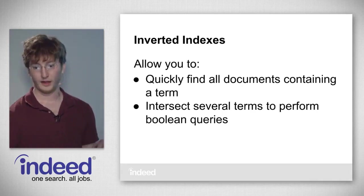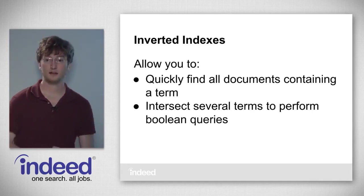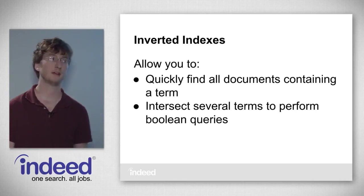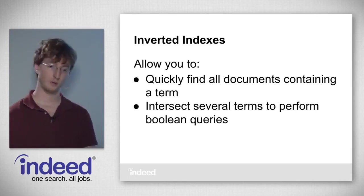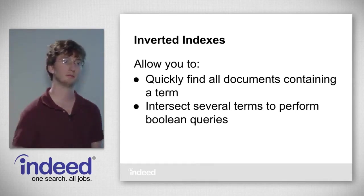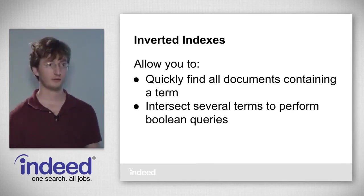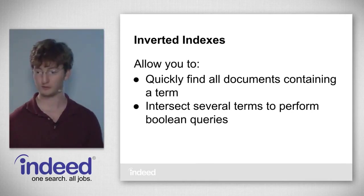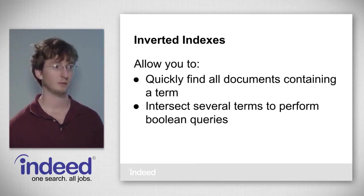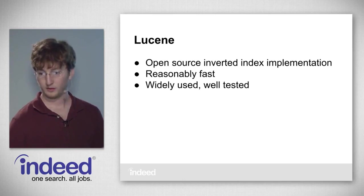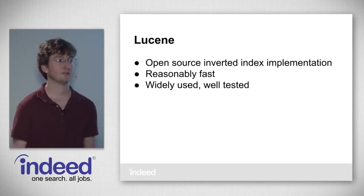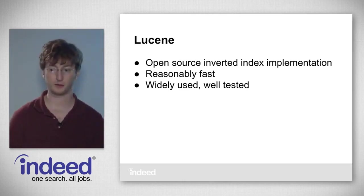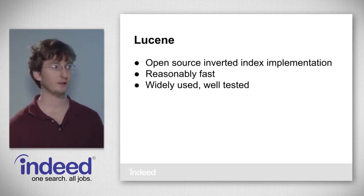Inverted indexes allow you to quickly find all documents containing a term, and you can build on that to intersect several terms and perform complex Boolean queries. Any kind of Boolean query can be implemented easily on top of an inverted index. If you need an inverted index implementation, you should use Lucene — it's open source, reasonably fast, widely used, and well tested.